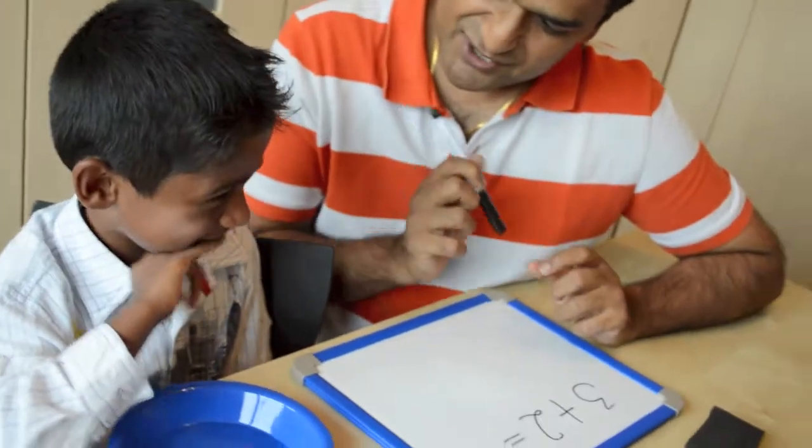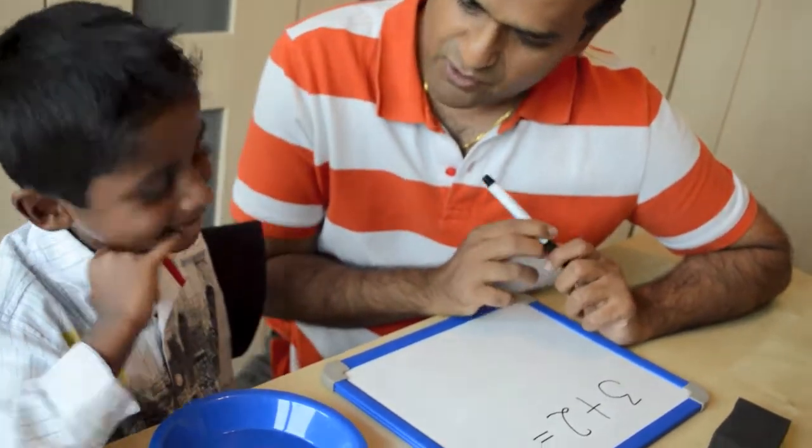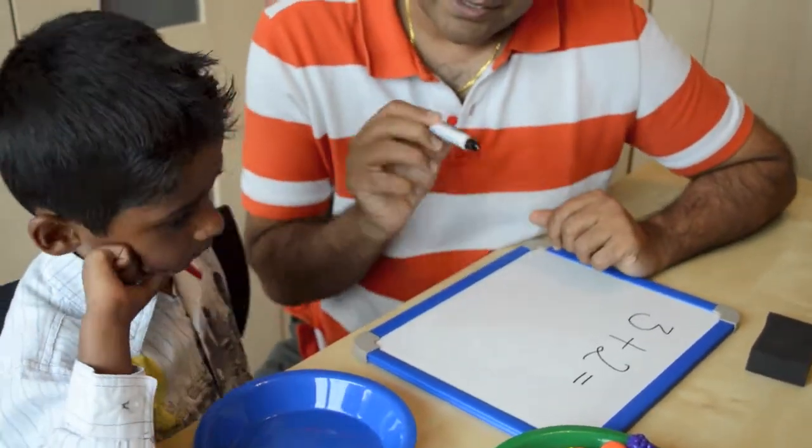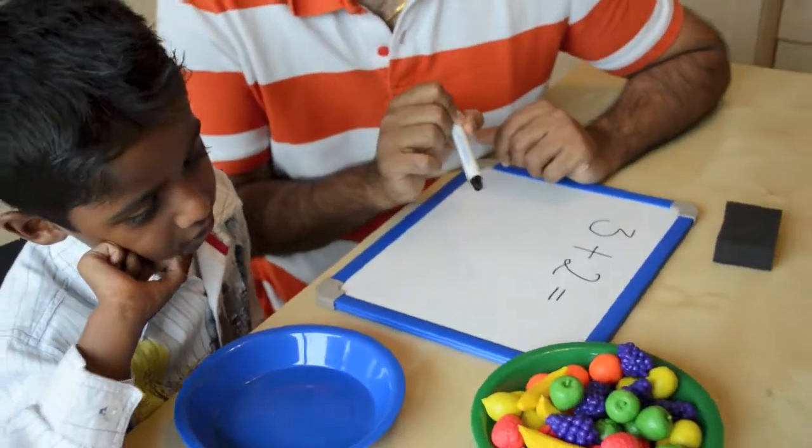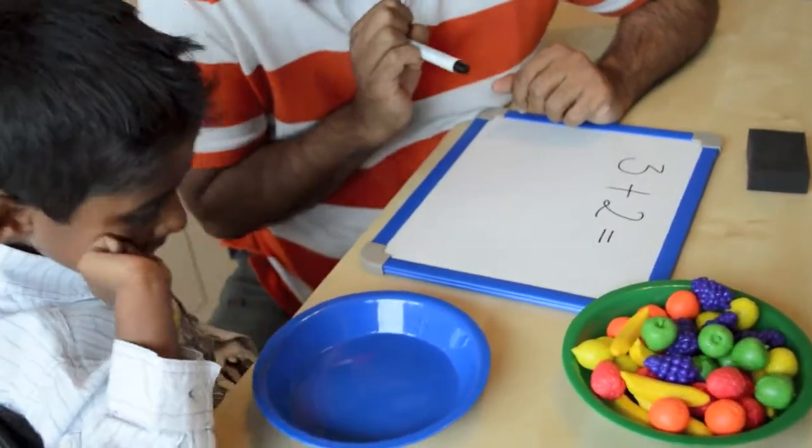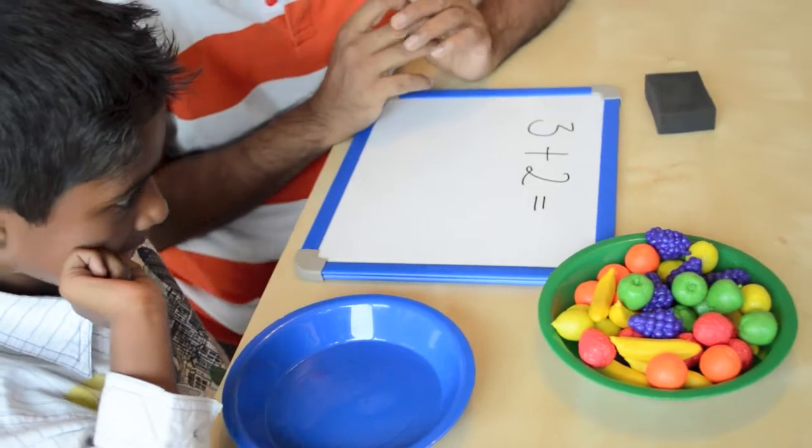Okay Zach, we're going to do some adding now, so I'm going to ask you to get different numbers of fruits. We're going to put them in, add them up, and then you're going to write down what the answer is. Shall we have a go?